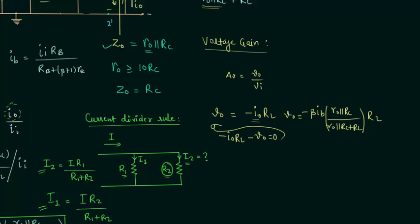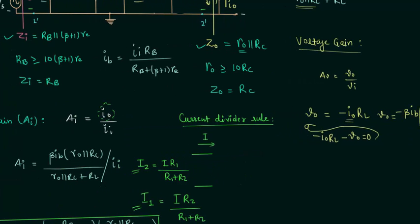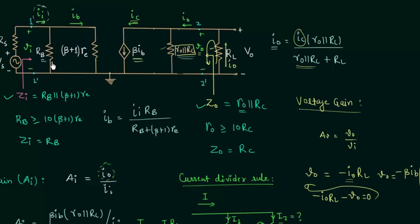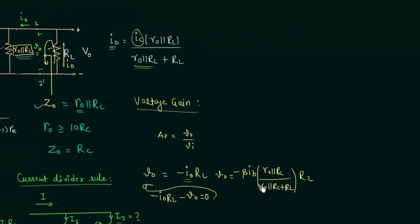Now we will find out the input voltage. The input voltage equals the voltage drop across resistance R_B or the resistance (beta plus 1)R_E, since they are connected in parallel and the drop is the same. We do not directly know the current through R_B, but we know the current through (beta plus 1)R_E is I_B, the base current. So V_I equals I_B multiplied by (beta plus 1)R_E.